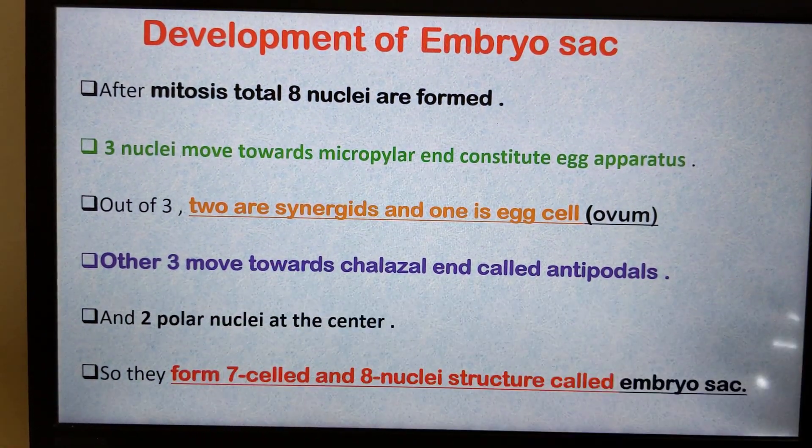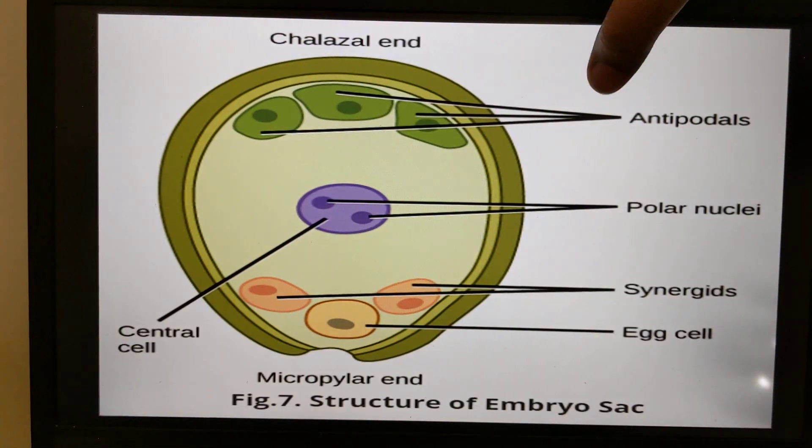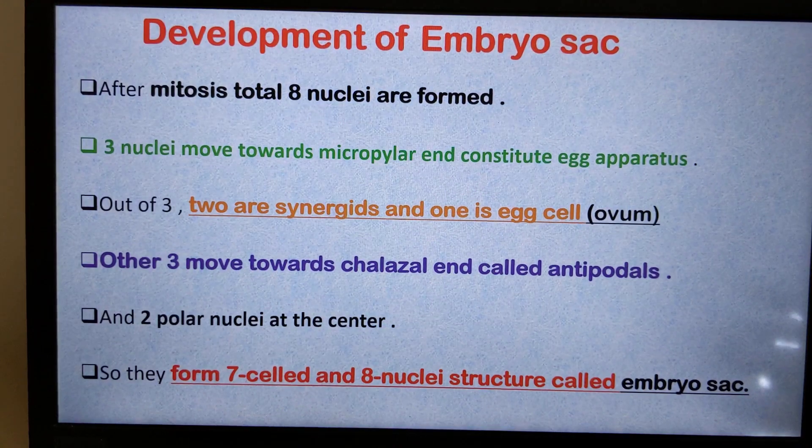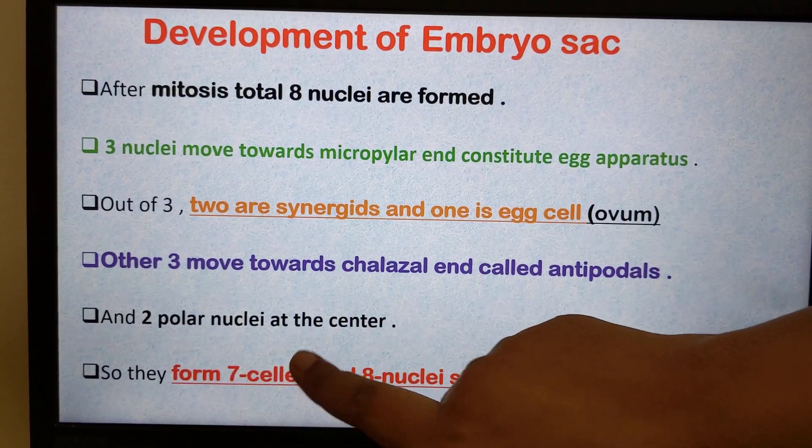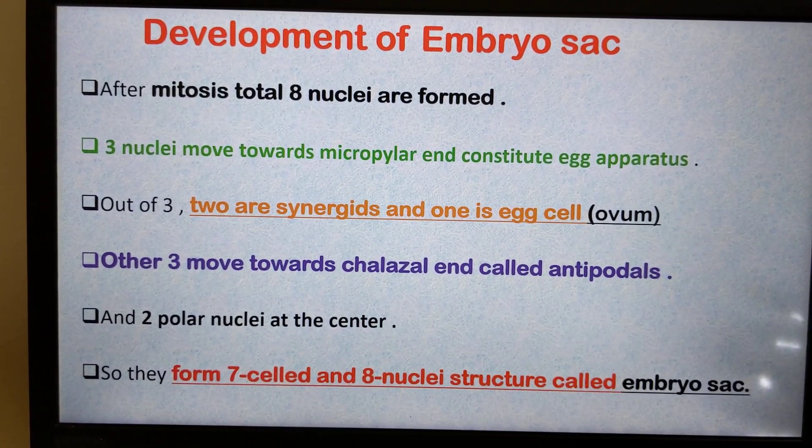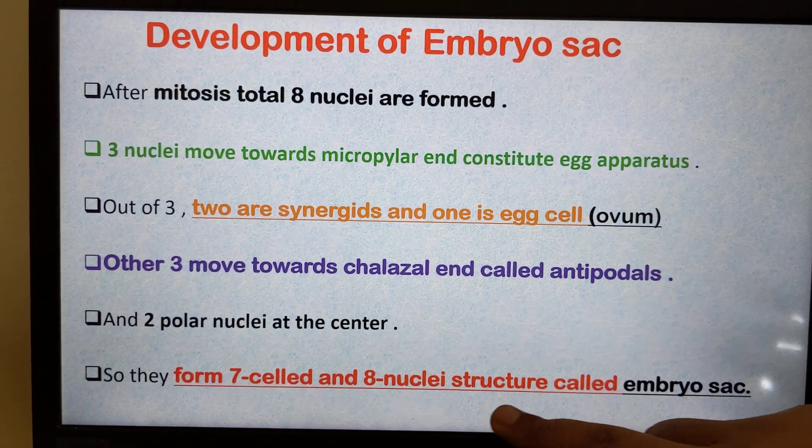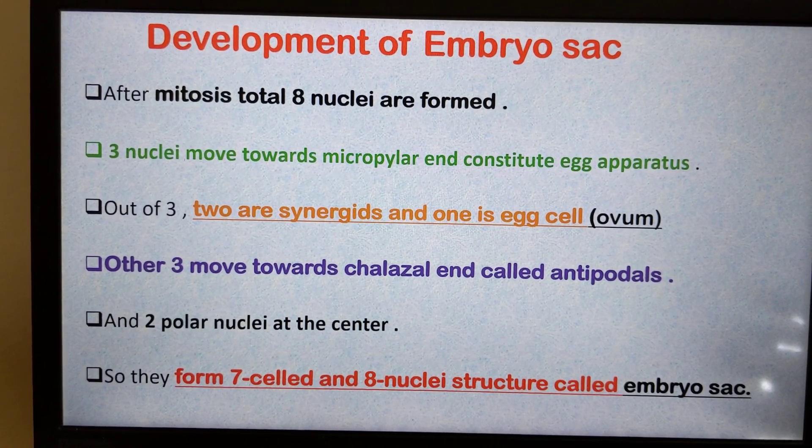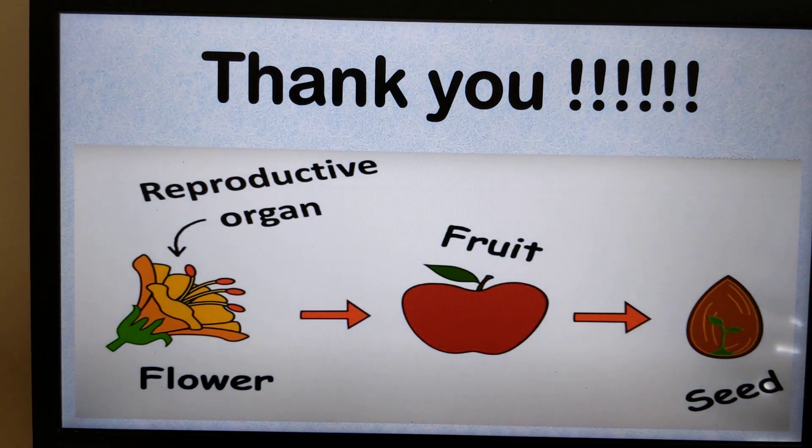Other three move towards chalazal end and are called antipodals. And at the center we have two polar nuclei, that is the central cell. So they form 7-celled and 8-nuclei structure called embryo sac. These were some of the important concepts in today's session.